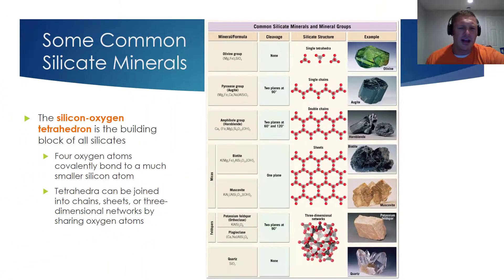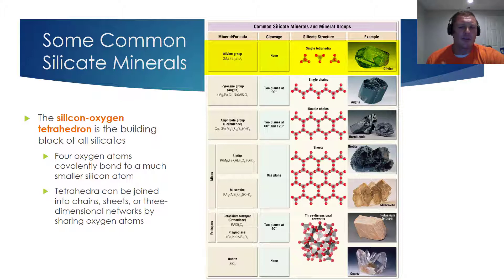One other point: olivine has a really simple silicate structure — basically just a bunch of scattered silicon-oxygen tetrahedra. We will talk about olivine in much greater depth in the next series of vodcasts, because it's an extremely important part of the discussion around igneous rocks, Bowen's reaction series, and things of that nature.